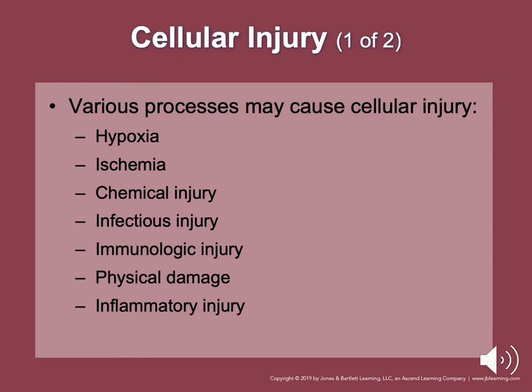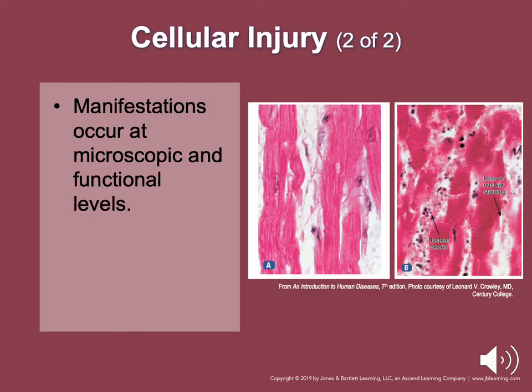Manifestations of cell injury occur at the microscopic structural or functional level. Functional disturbances may include insufficient O2 utilization, intracellular acidosis, toxic waste accumulation, and derangement of nutrient metabolization. Dysfunction in one system inevitably affects the function of other systems with cellular injury.